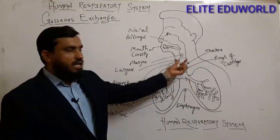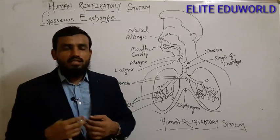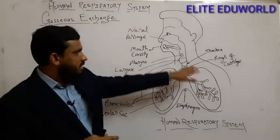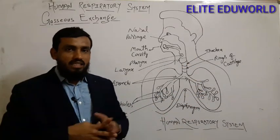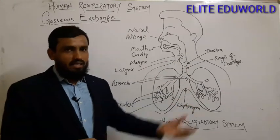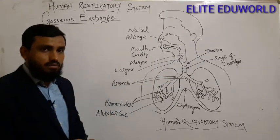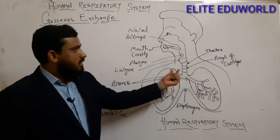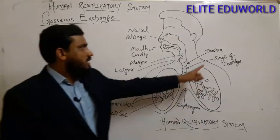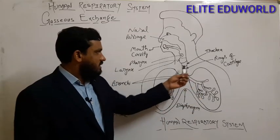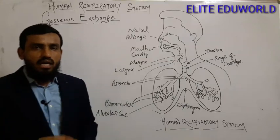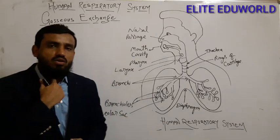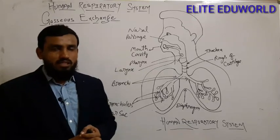From the larynx the inhaled air enters the trachea, which is also called the wind pipe. Unlike the food pipe (esophagus) in the digestive system, here in the respiratory system we have the trachea — the wind pipe. It is covered by half ring-like structures called rings of cartilage, which are soft bone structures providing protection to the trachea.